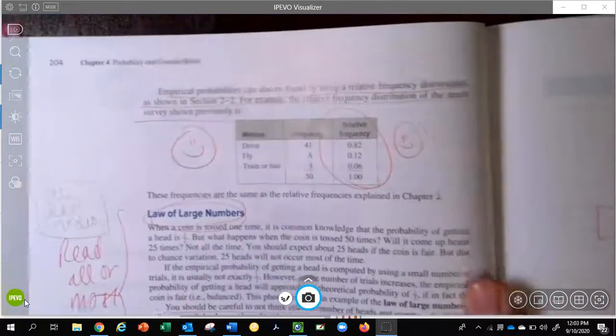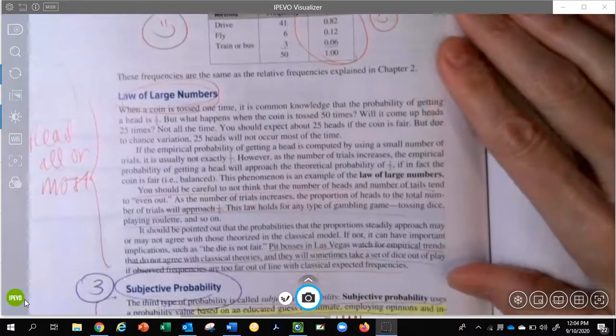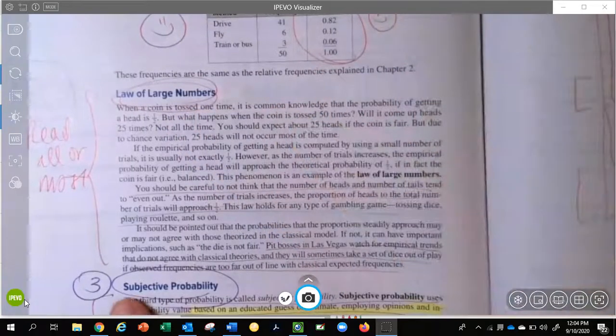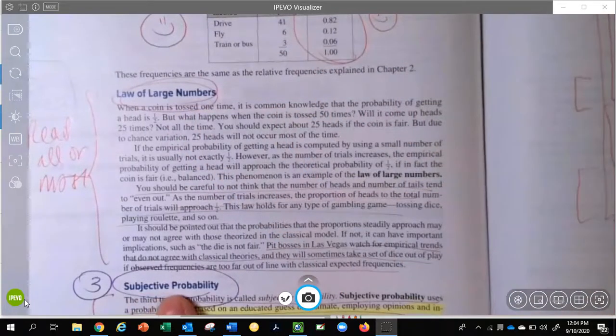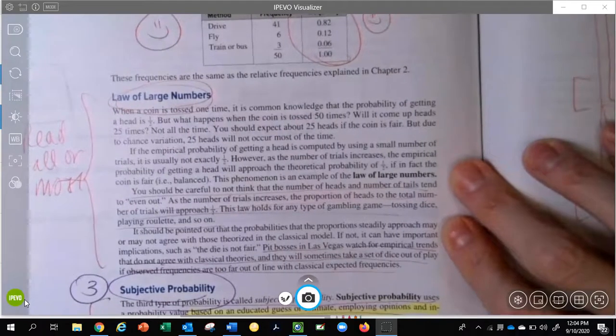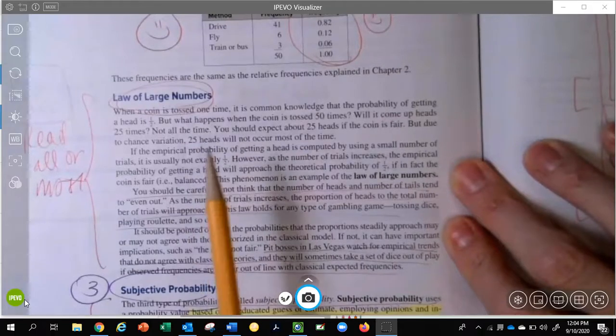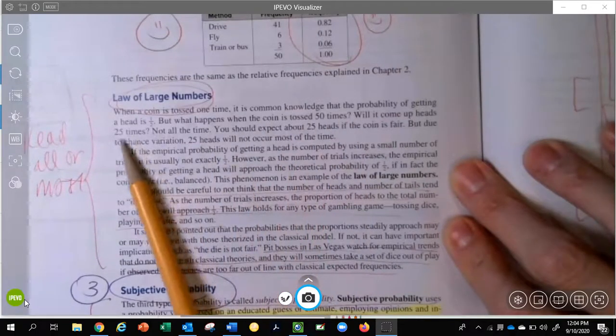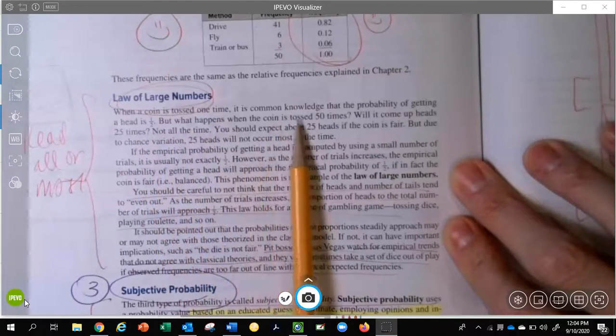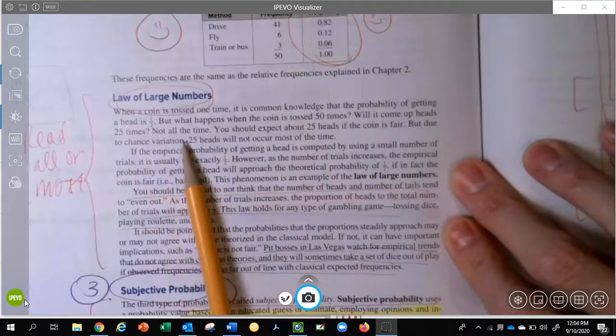That's going to lead us to the last part of this chapter. I'm on page 204, and I want to read through most, if not all, of information about the law of large numbers before we get into subjective probability, which is the third type of probability for this section. When a coin is tossed one time, it is common knowledge that the probability of getting a head is one out of two. But what happens when the coin is tossed 50 times? Will it come up heads 25? Not all the time.